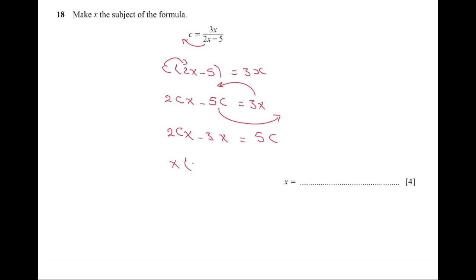By taking the highest common factor x, we get x times (2c minus 3) is equal to 5c. Then x equals 5c over (2c minus 3).